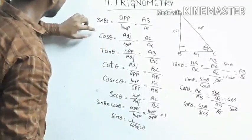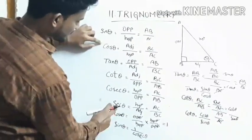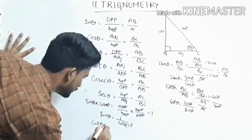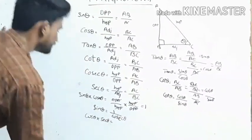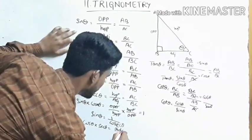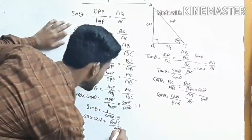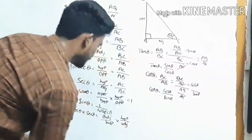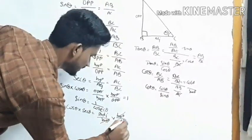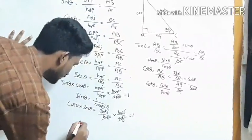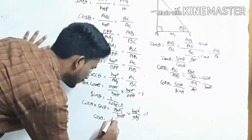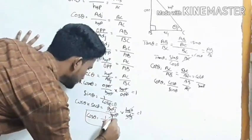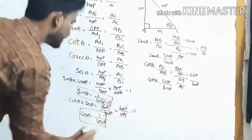Similarly, cos theta is adjacent by hypotenuse and secant theta is hypotenuse by adjacent. So cos theta into secant theta equals adjacent by hypotenuse into hypotenuse by adjacent. Both cancel to give 1. Therefore cos theta equals 1 by secant theta.